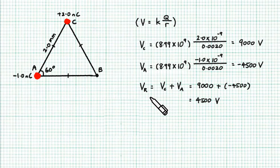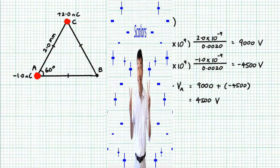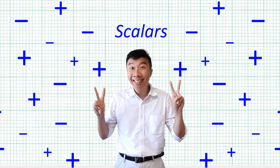Is it simply the electric high ground of 9,000V due to charge C plus the electric low ground of negative 4,500V created by charge A? Yes, it is. It's that simple because electric potentials are scalar quantities.